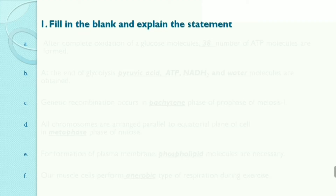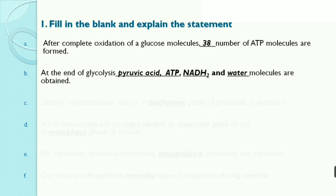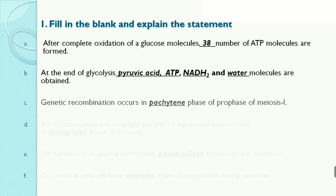Fill in the blank and explain the statements. First: after complete oxidation of glucose molecules, 38 ATP molecules are formed. At the end of glycolysis, two ATP, NADH2, and water molecules are obtained.